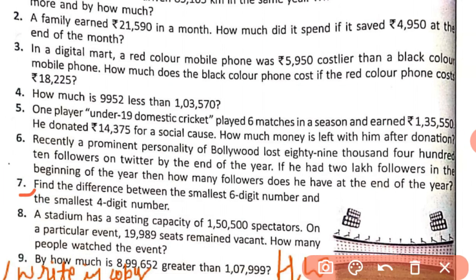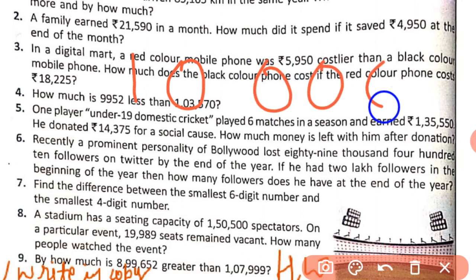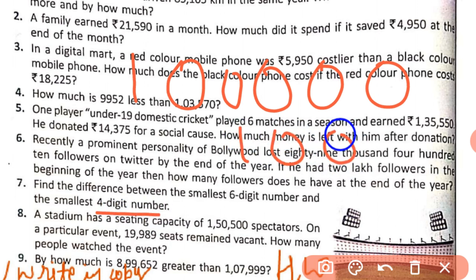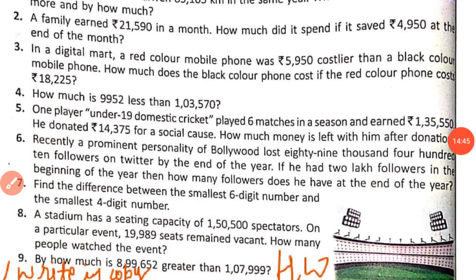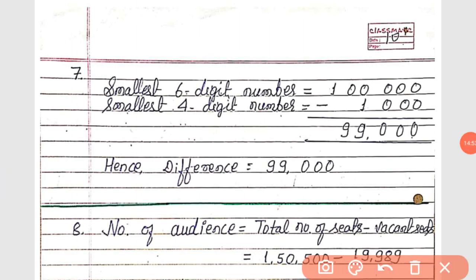Question number 7: find the difference between the smallest 6-digit number and the smallest 4-digit number. The smallest 6-digit number is 1,00,000 and the smallest 4-digit number is 1,000. We subtract: 1,00,000 minus 1,000. After subtracting, we get 99,000. Hence, the difference is equal to 99,000.